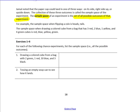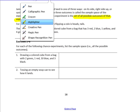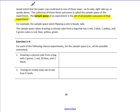For exercises one through six, for each of the following chance experiments, list the sample space — the possible outcomes. Drawing a colored cube from a bag with two green, one red, ten blue, and three black. It doesn't matter how many cubes there are. What matters is how many different colors there are. So the sample space consists of green, red, blue, and black.